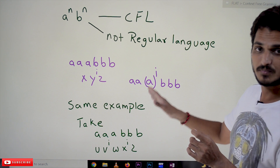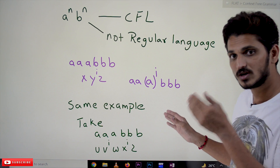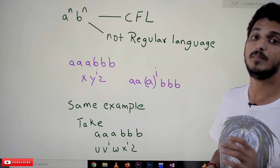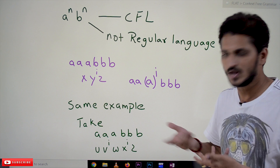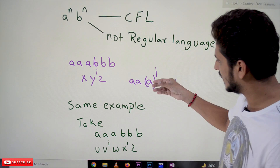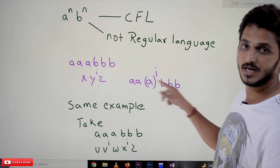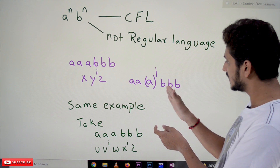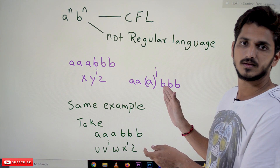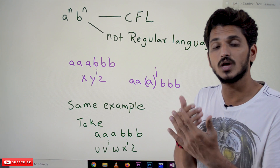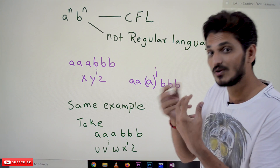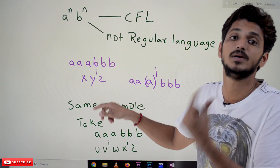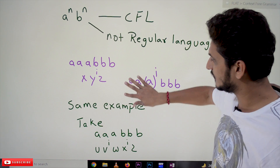We keep on pumping the Y variable and we are not going to get the strings that are present in the language, so we say that the language is not a regular language. That is the logic we discussed when we discussed about pumping lemma for regular languages. If you keep on pumping A but not B, regular languages can't do the equality count for two symbols. That's why we have taken only a single pumping variable.